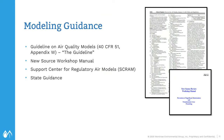Whenever you're doing a modeling assessment, it is critical to review the correct modeling guidance — this is not as simple as it sounds because there is a lot of guidance, including outdated guidance, out there. Appendix W, or the Guideline on Air Quality Models, can be found in 40 CFR Part 51. The purpose of Appendix W is to promote consistency in the application of air quality models for regulatory purposes. It is not just guidance — it is the regulation, so it must be followed, and all changes to Appendix W must follow rulemaking requirements.